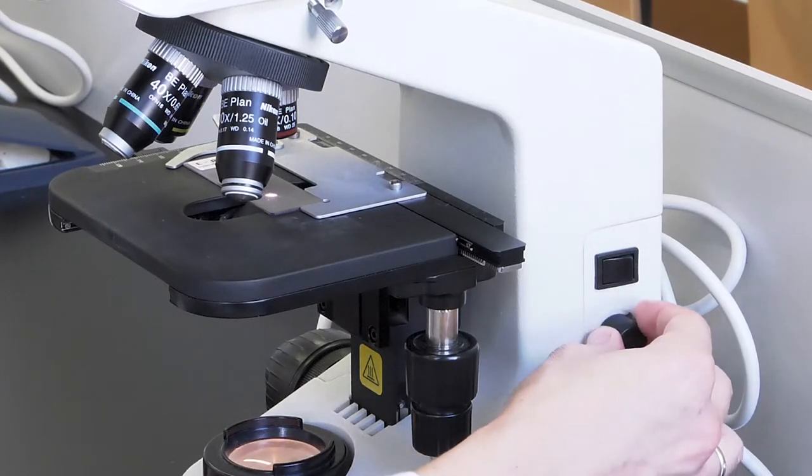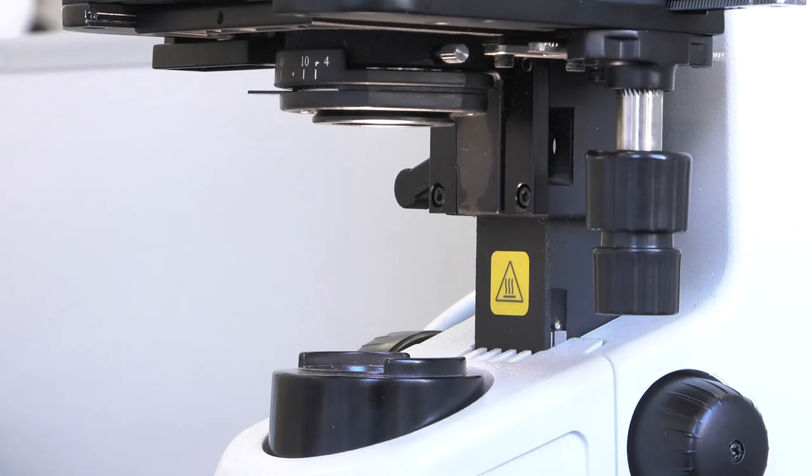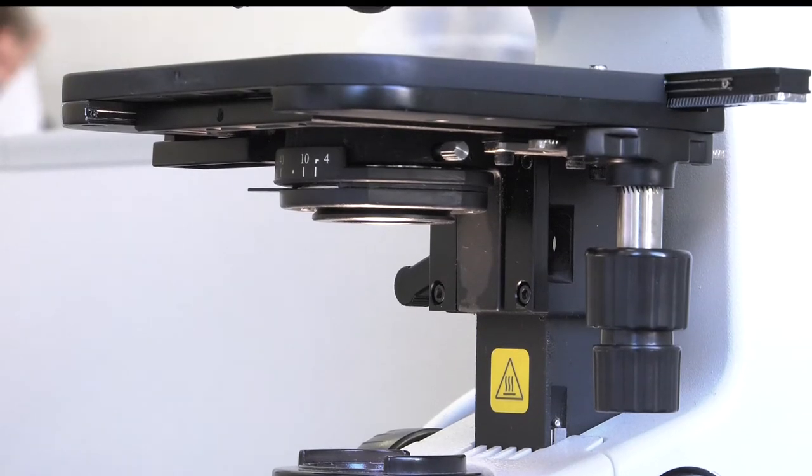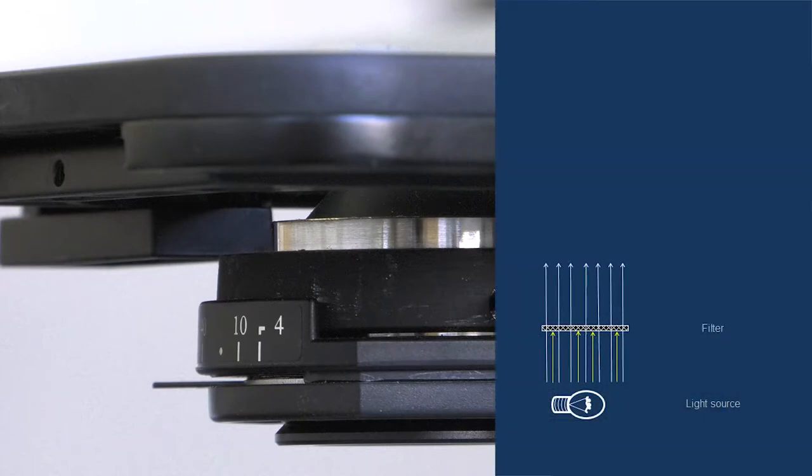However, before reaching the condenser lens, the light must pass through two elements. The first one is the light filter. The filter absorbs the excess of radiation from certain colors and improves the appearance of the projected image.